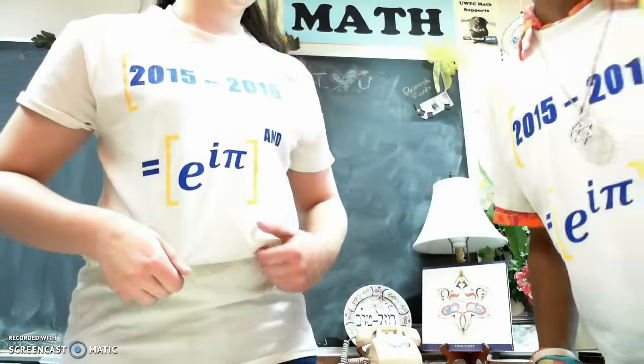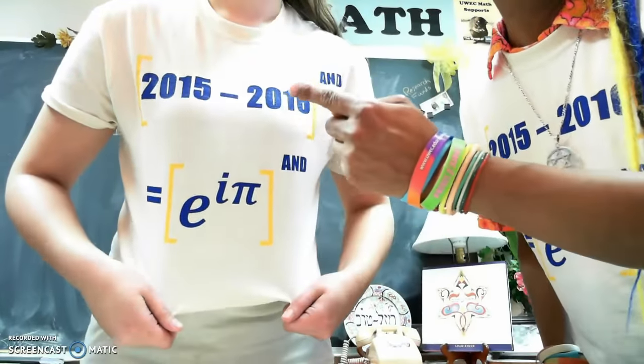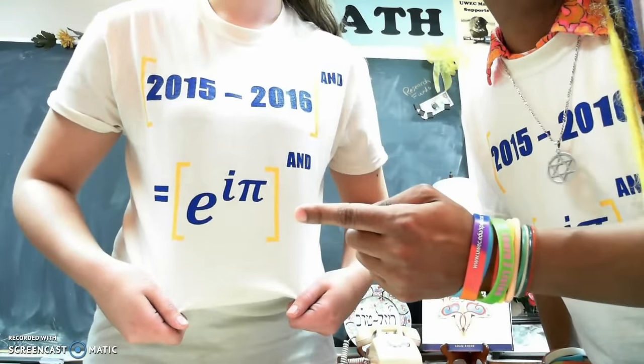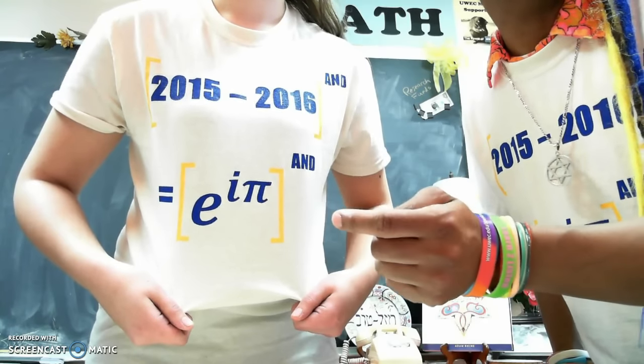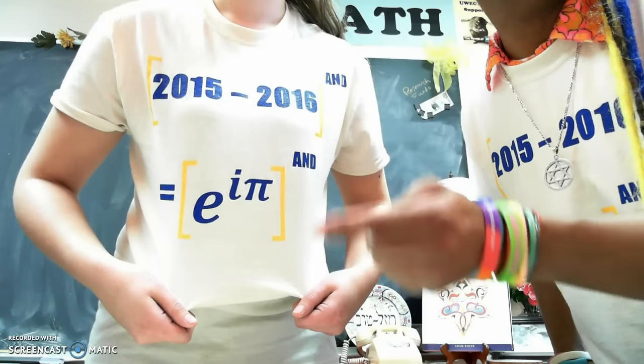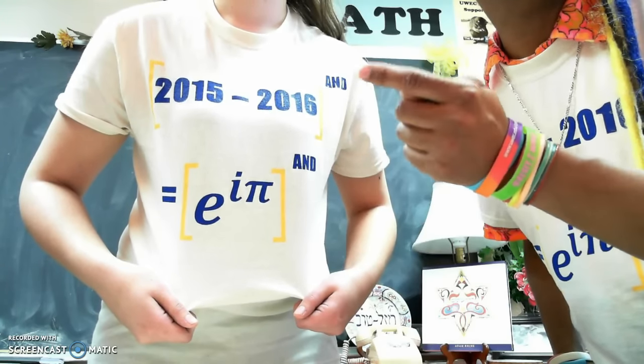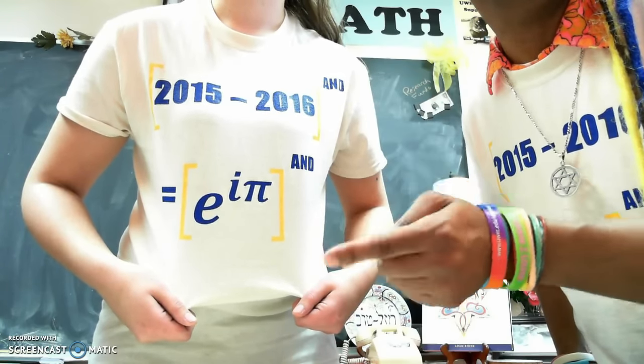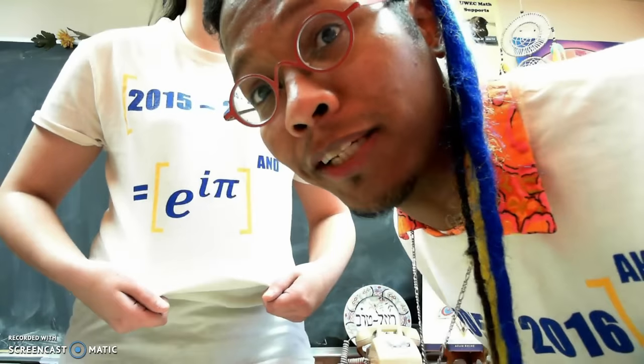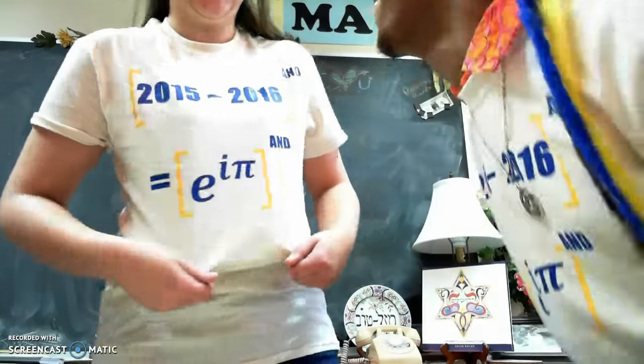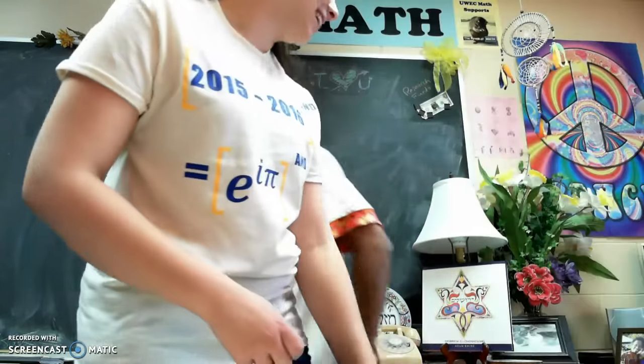So let's explain why negative 1 here is equal to e to the i pi, in case you forget. And of course, once we prove that equality, we raise both sides to the power of AND, and the equality still holds. Okay, so let's begin.